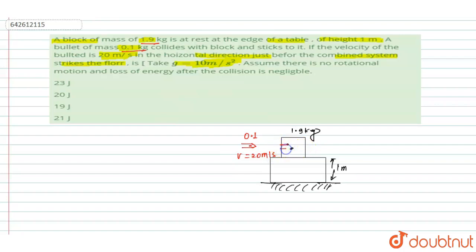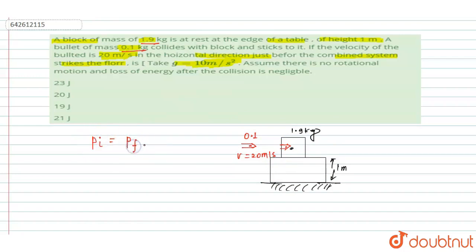After the bullet sticks to the block, no external force acts on this system. When we consider this as a system, no external force is acting on it, which means momentum is conserved. So P initial equals P final.